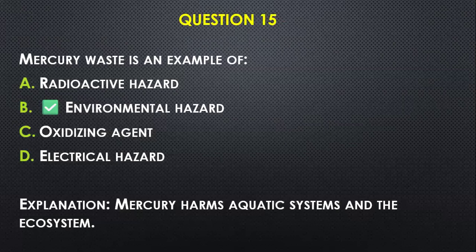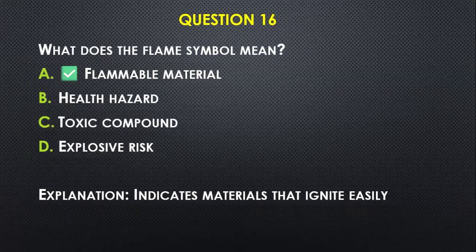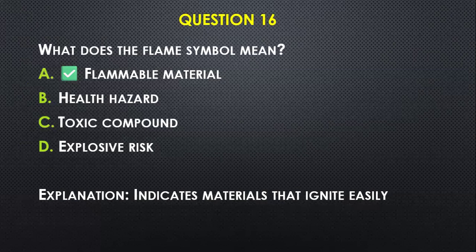Question number fifteen: Mercury waste is an example of — A) radioactive hazard, B) environmental hazard, C) oxidizing hazard, D) electrical hazard. Mercury harms aquatic systems and is known to accumulate in the adipose tissues of both fish and other animals, so it is an environmental hazard.